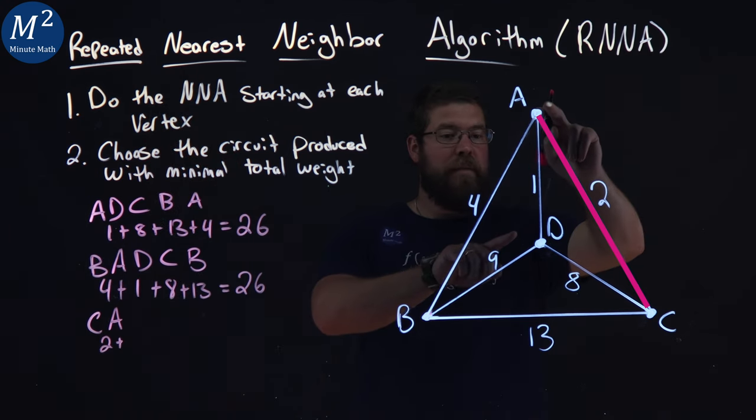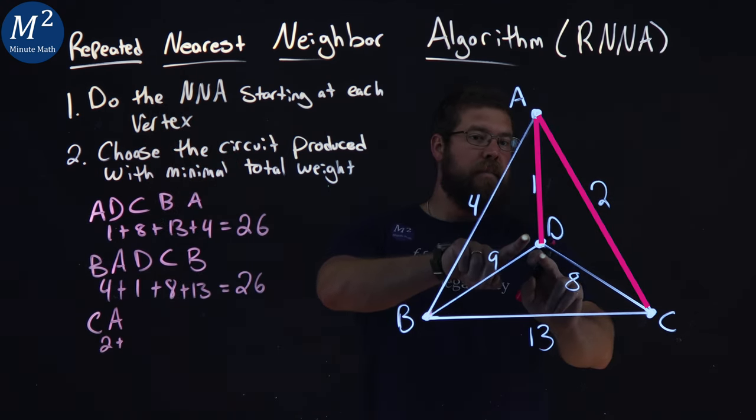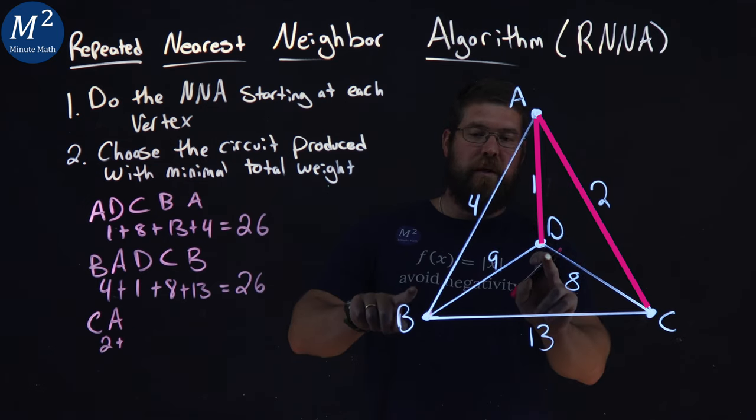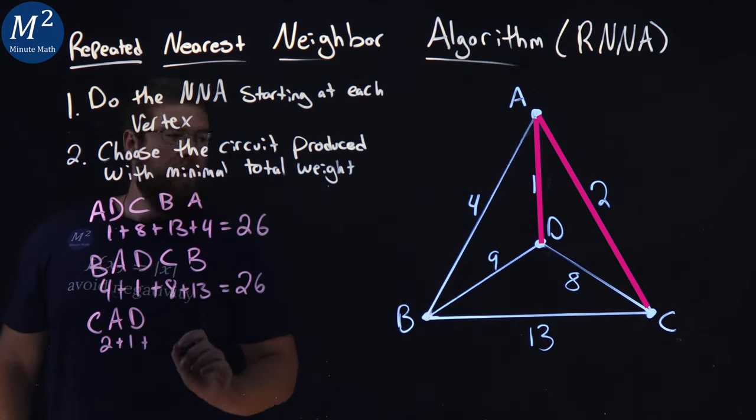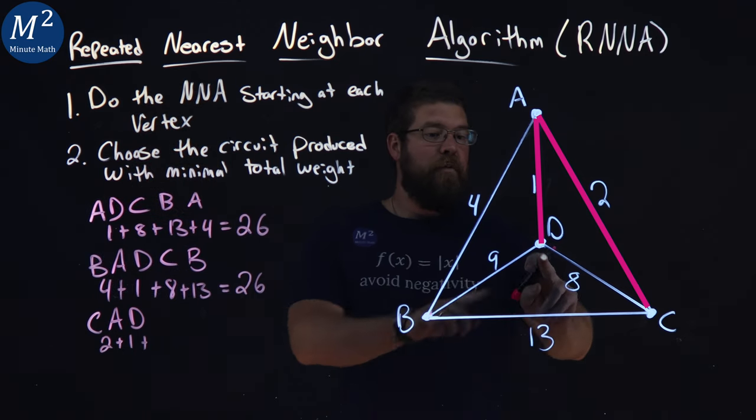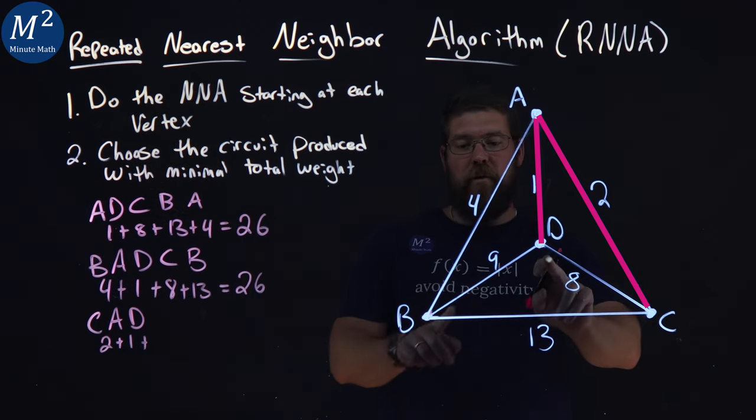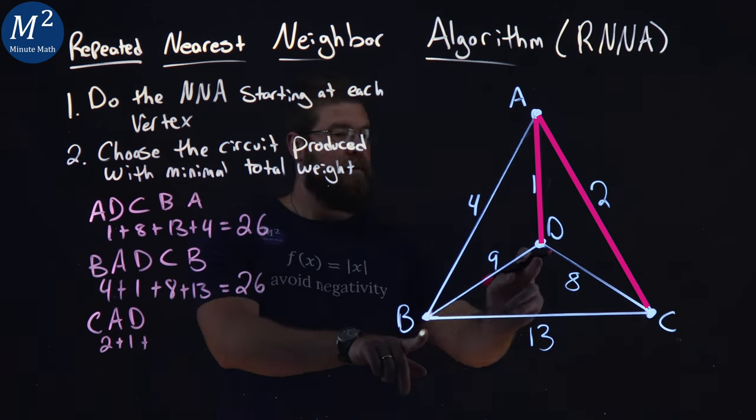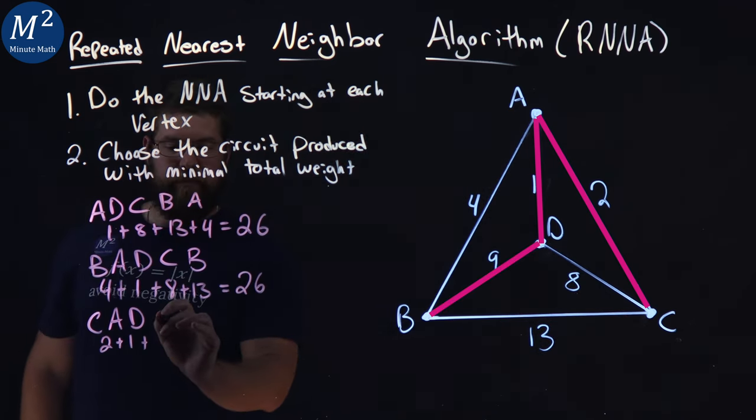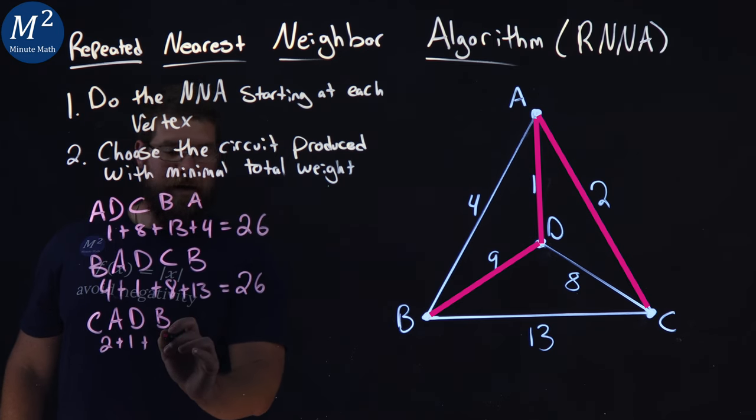Then from A, the nearest neighbor would be D, right here. Because B would be 4, D is 1. So D, 1. Now from D, we've already been to C, already been to A. So to complete it, we have to hit B here. B is our next one here. So let's go to B. That's a weight of 9.